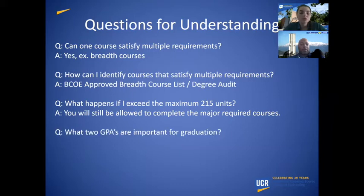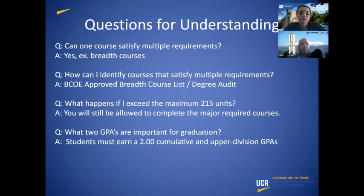What two GPAs are important for graduation? You must earn at least a 2.0 cumulative and a 2.0 upper division major GPA to earn your degree.